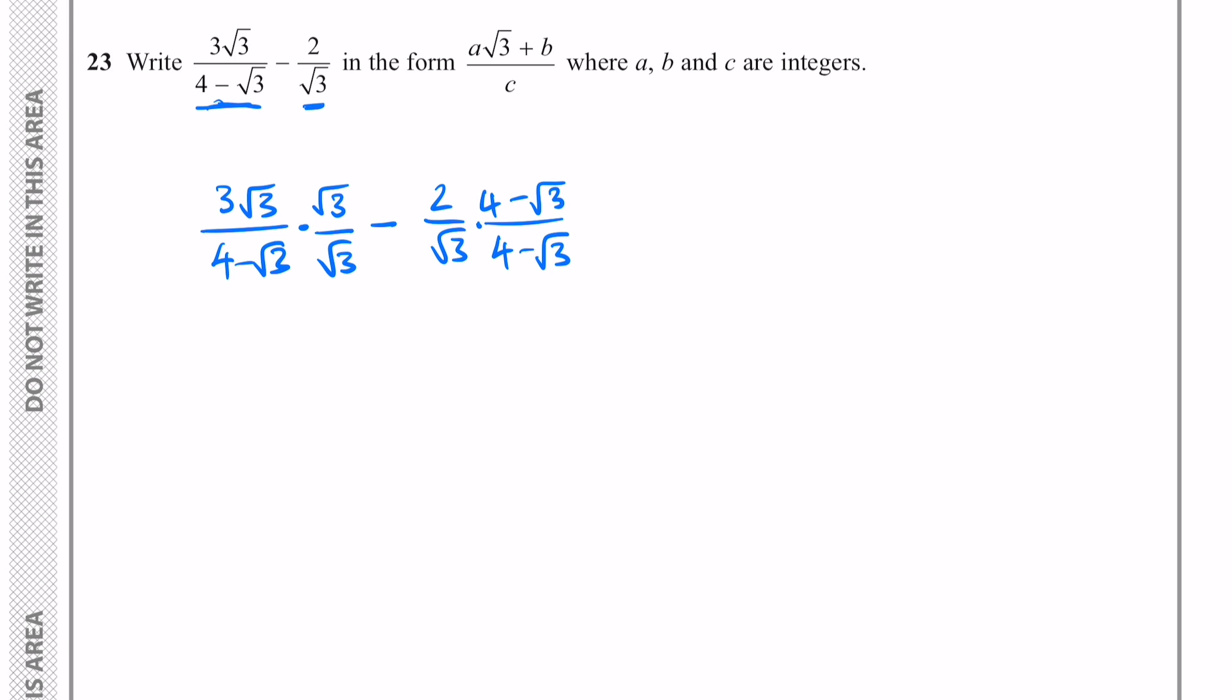Now we have a common denominator and we can subtract the numerators. I'm going to multiply these √3's, so √3 times √3 is 3, multiplied by 3 is 9.